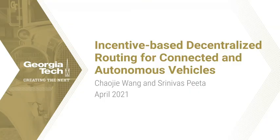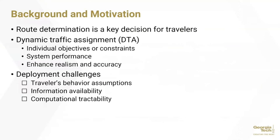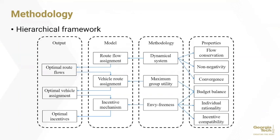My name is Charjie Wang. My presentation topic is incentive-based decentralized routing for connected and autonomous vehicles. Routing strategies based on dynamic traffic assignment have been proposed in the literature to optimize system performance. However, challenges have persisted in their deployment ability and effectiveness due to strong assumptions on travelers' behavior, availability of network-level real-time traffic information, and the high computational burden. To address these gaps, this study proposes an incentive-based decentralized routing strategy to nudge the network performance closer to the system optimal for the context where all vehicles are connected and autonomous vehicles.